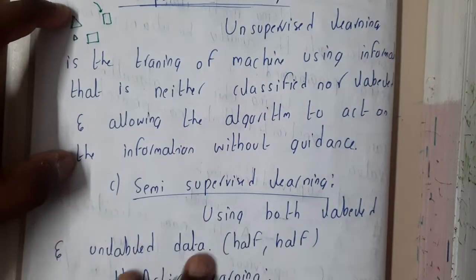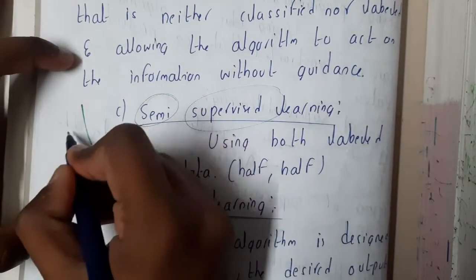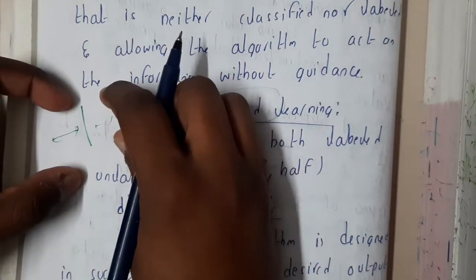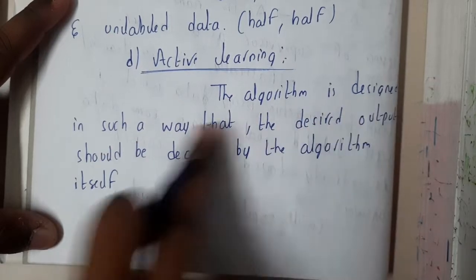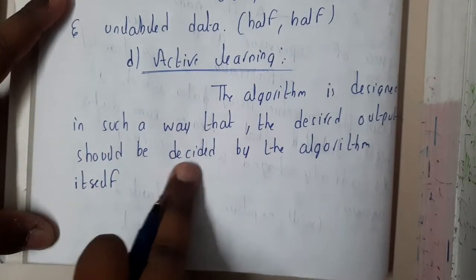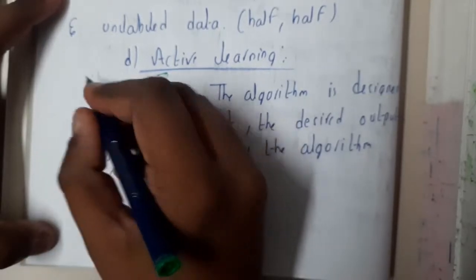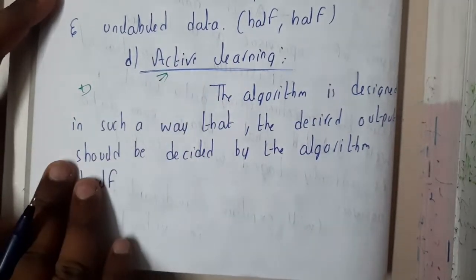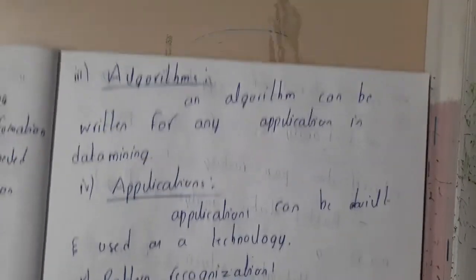The third type is semi-supervised learning. As the name suggests, it is half supervised: half the data has labels and half does not. The labeled data helps classify the unlabeled data. The last type is active learning, where the algorithm is designed so that the desired output is decided by the algorithm itself, and the user acts as the judge — providing feedback on whether the output is correct or wrong, so the algorithm can learn from it.